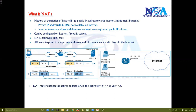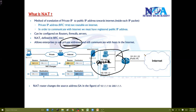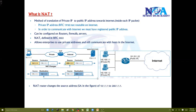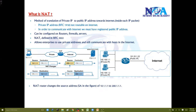NAT allows enterprises to use private IP addresses within the LAN and still access the internet because of the translation of private IP to public IP. As shown, NAT changes the source address — in our example the source address changes from 10.1.1.1 to 200.1.1.1 as shown in the picture.